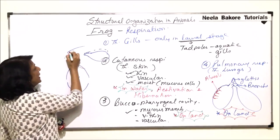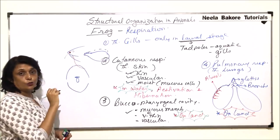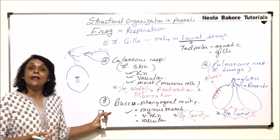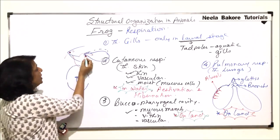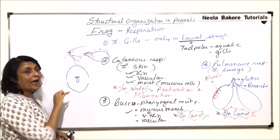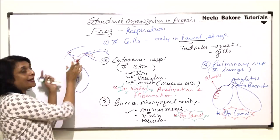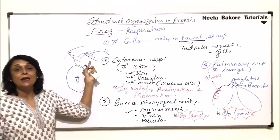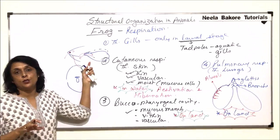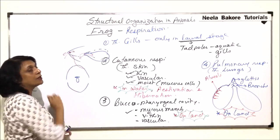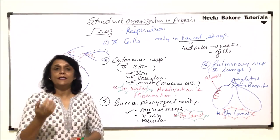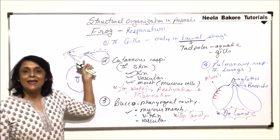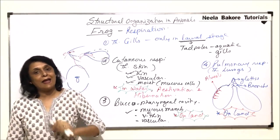After this, the external nares close and the glottis opens, so the air goes into the lungs. The same thing happens during exhalation: the glottis opens, air comes back into the buccal sac, and the external nares are still closed, so air remains in this sac-like region — the buccal cavity and pharyngeal region — for some time, allowing gaseous exchange to take place. Then the external nares open. So whether it is inhalation or exhalation, air remains trapped in this sac-like area which is the buccal cavity and pharyngeal region.